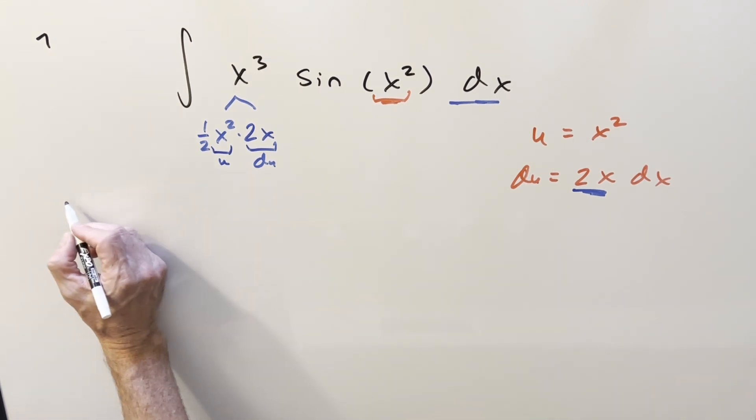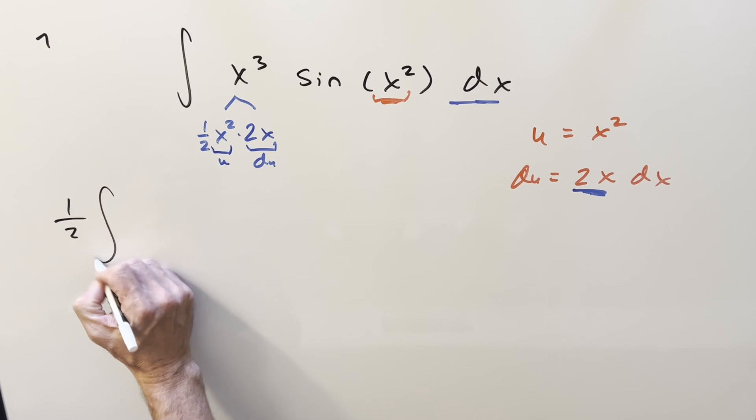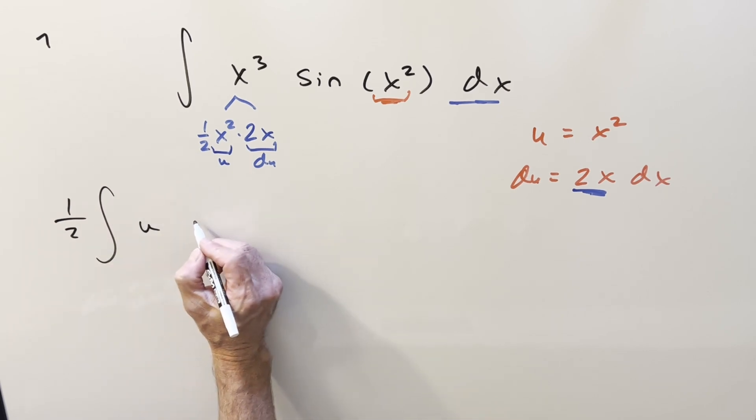So rewriting it, let's take the one half up front as a constant. So we have one half, that thing becomes u, this thing becomes sine of u, and everything else is just du.